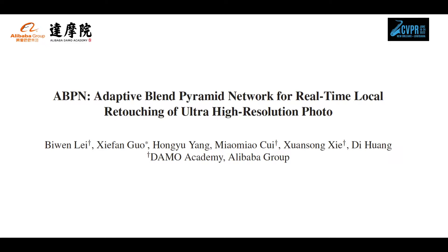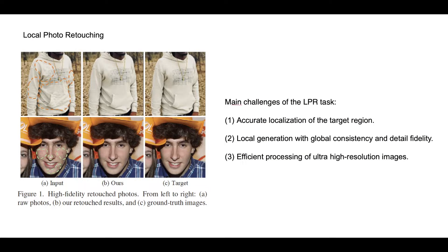In this work, we present an adaptive blend pyramid network for real-time local retouching of ultra high-resolution photos. Most existing methods of photo retouching are designed for global retouching and seldom pay attention to the local region, while the latter is actually much more tedious and time-consuming in photography pipelines.